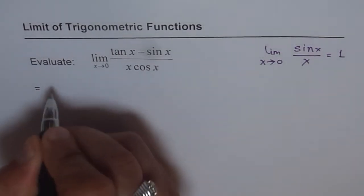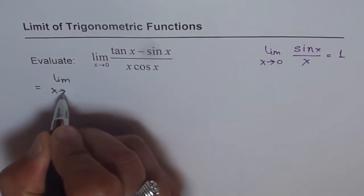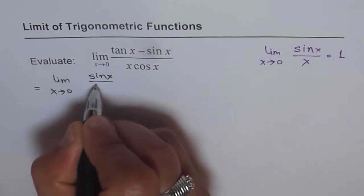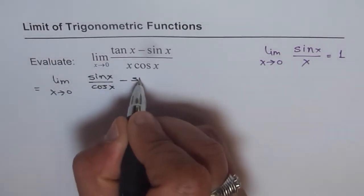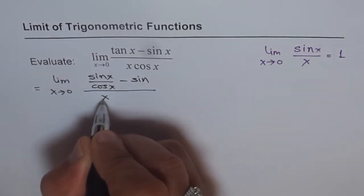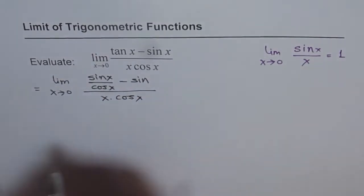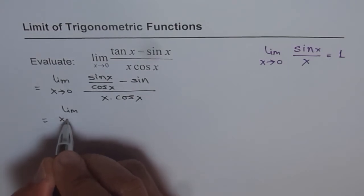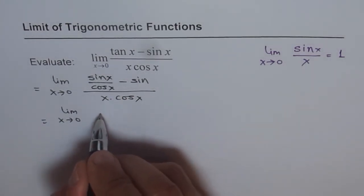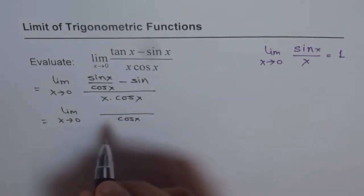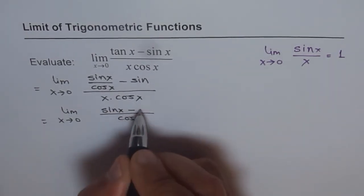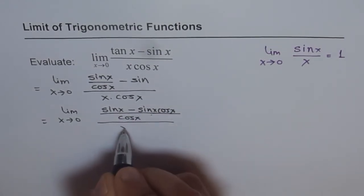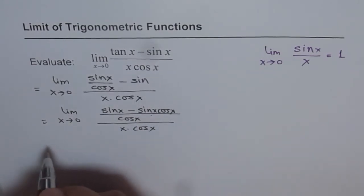So what we get here is, we have limit x approaches 0, numerator tan x, let's write it as sine x over cosine x minus sine x, and then in denominator we have x times cos x. Now we can take common denominator and simplify this. So we have limit x approaches 0. When we take common denominator, we get cos x in the numerator as denominator and then we can write sine x minus sine x cos x divided by x times cos x.